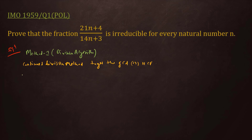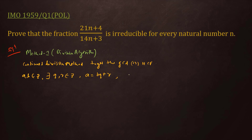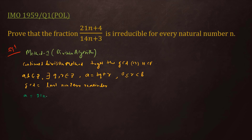So the definition we will write here. For every integer a, b, d, there exist distinct integer quotient q and remainder r which are also integers, and it satisfies: a is equal to b·q plus r, where r is greater than or equal to 0 and less than b. And the GCD is the last non-zero remainder. In this question, a is 21n plus 4 and b is 14n plus 3, and we can notice that a is greater than b.